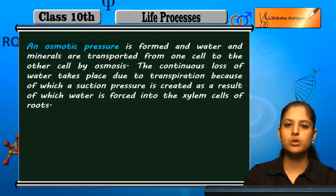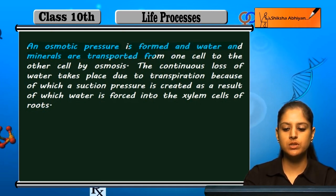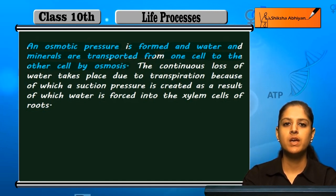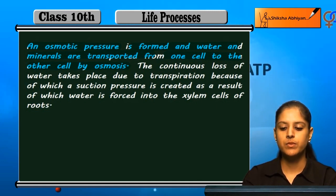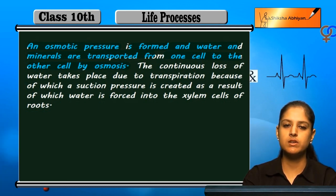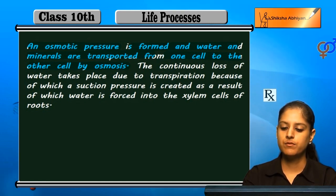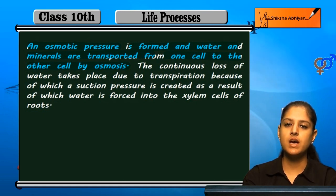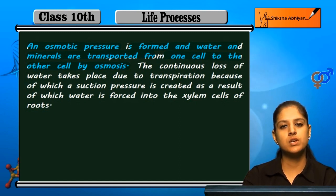This creates an osmotic pressure, and water and minerals are transported from one cell to the other by osmosis — osmosis meaning movement of water from high concentration to low concentration. Due to the ion difference, osmotic pressure is created inside the xylem, and through osmosis, water and minerals are transferred to all cells in the plant body.